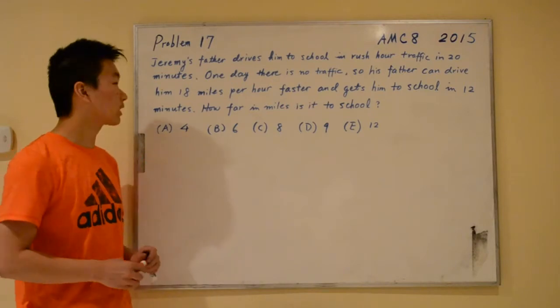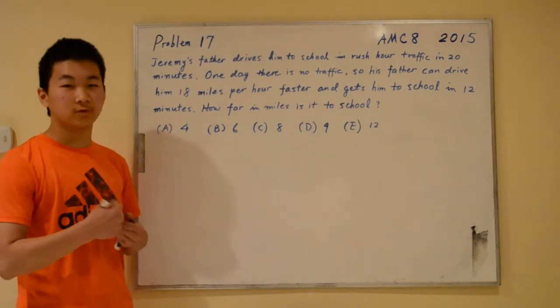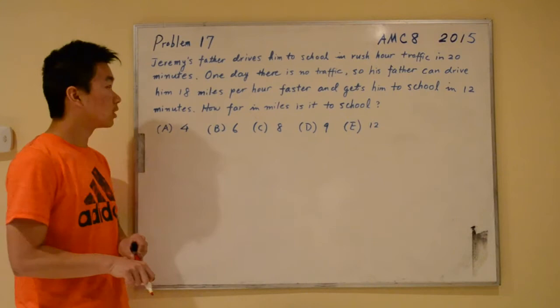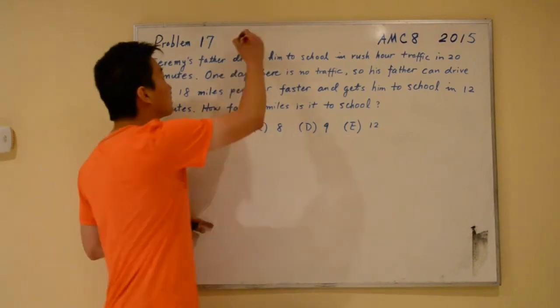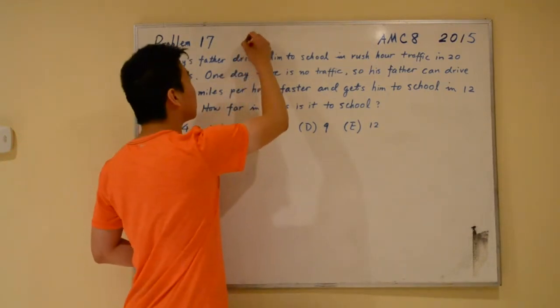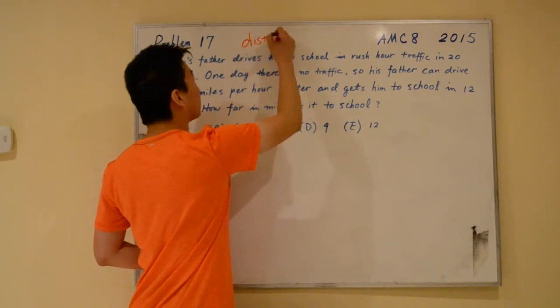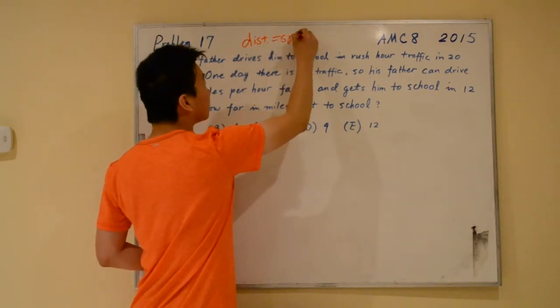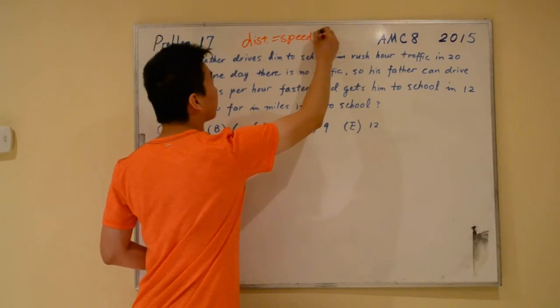First of all, we recognize that this is a distance, speed, and time problem. The relationship between distance, speed, and time is that distance equals speed multiplied by the time.